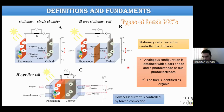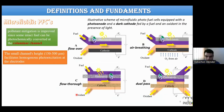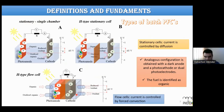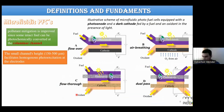We can also have a flow cell, where mass transport is controlled by forced convection rather than diffusion. Reactants are forced through or over the electrodes. Additionally, a microfluidic flow cell has a channel height on the micro scale, which facilitates photo-excitation since light travels a shorter distance to reach the semiconductor, improving pollutant mitigation.